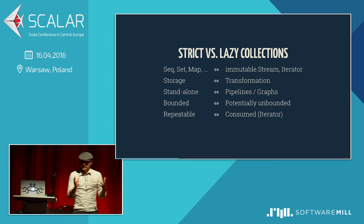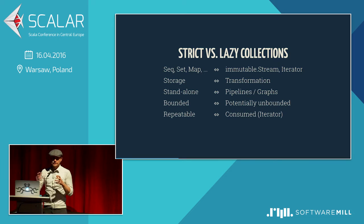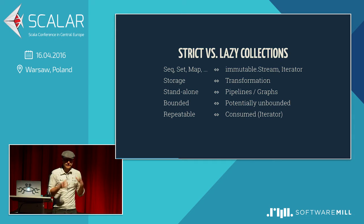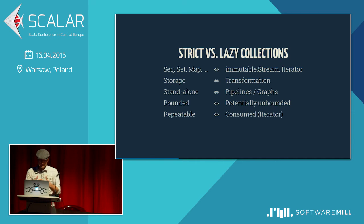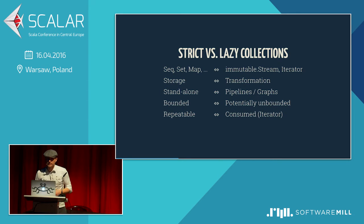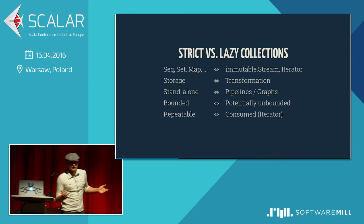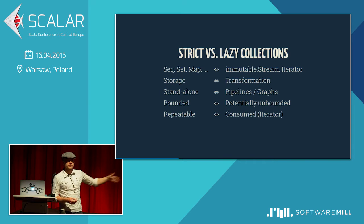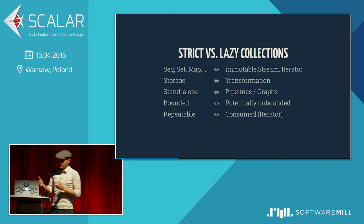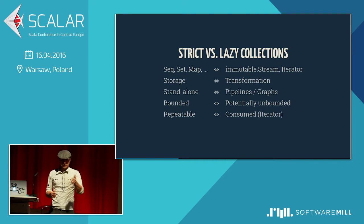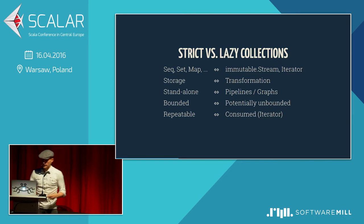If we contrast them, strict collections are really about storage — you have something. The other ones are more about transformation: you have an upstream, you transform it, you get it downstream. Strict collections are standalone; you have the list of strings and can move it somewhere else. The other ones get connected into pipelines and graphs. Strict ones must be bounded. Immutable Stream and Iterator can be potentially unbounded — they can run on forever, like the stream of all natural numbers. With storage you can cycle through them repeatedly. Stream is repeatable as it's immutable, but Iterator can be consumed — you go through it once, and that's it.